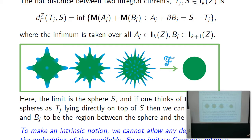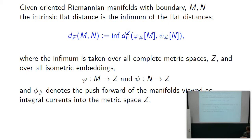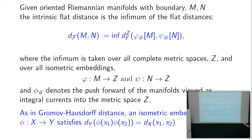The intrinsic flat distance: take two oriented Riemannian manifolds — it's crucial that they be oriented, otherwise there's no notion of subtracting them as currents. The intrinsic flat distance is the infimum of the push-forward flat distance, taken over all complete metric spaces Z and all isometric embeddings. We proved with joint work with Wenger that if M and N are compact and the flat distance between them is zero, then there is an orientation-preserving isometry between them.